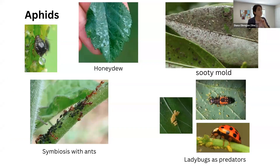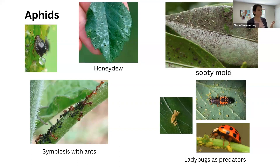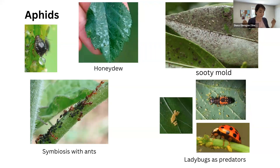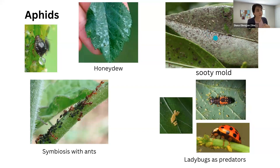As mentioned, aphids produce honeydew. If you see leaves that are glossy and sticky, that might be honeydew produced by aphids or the other insects I mentioned. This honeydew can result in two things: first, it can attract ants. Ants like honeydew and they treat aphids like cattle — moving them around and extracting their honeydew. In exchange, ants provide defense against predators and will defend the aphids from, for example, ladybugs. The honeydew is also very problematic because it can lead to the growth of sooty mold.